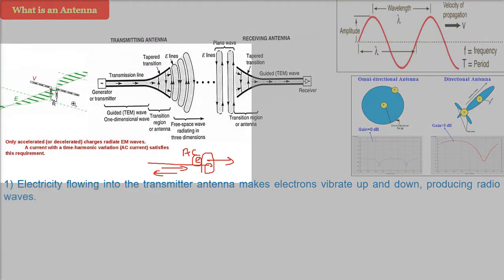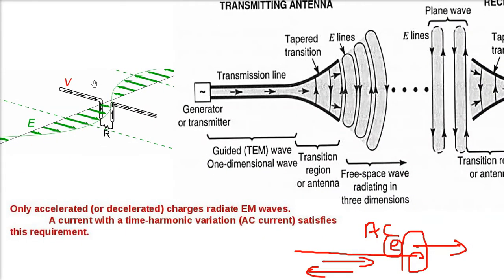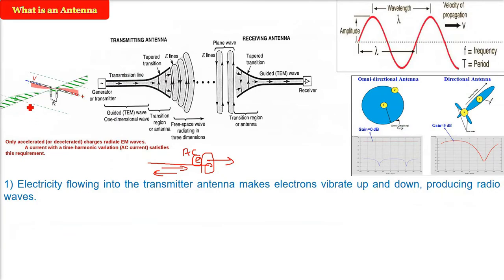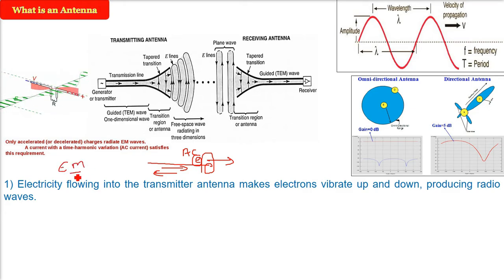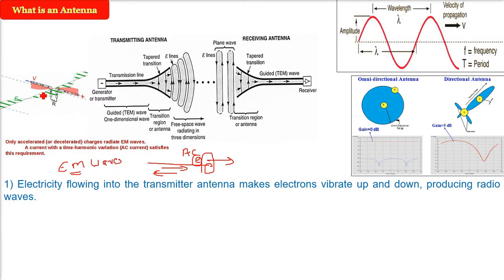Whenever we have this kind of alternating current, the electrons are moving. A current with time harmonic variation — that is the alternating current — causes the electrons to get accelerated and decelerated. So it changes the electric field and the magnetic field. And whenever the electric and magnetic field change, there will be a production of electromagnetic waves — waves called electromagnetic waves because of the electromagnetic field.